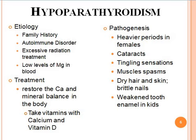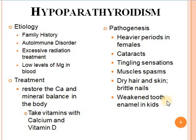Pathogenesis: hyposecretion of parathormone lowers the concentration of calcium ions in the blood and tissues due to increased calcium excretion in urine. This increases the excitability of muscles, causing tingling sensations and muscle spasms. It may cause heavier periods in females and cataracts. Due to loss of calcium, hair and skin become dry and nails may become brittle. It may also cause weakening of tooth enamel in children. Treatment involves restoring calcium and mineral balance by taking calcium and vitamin D supplements.